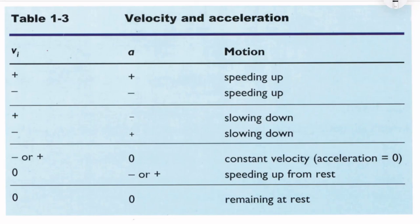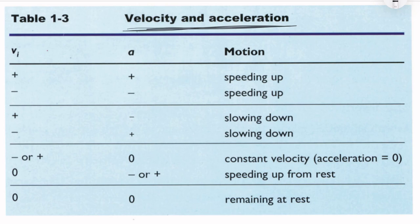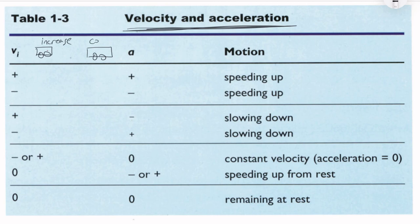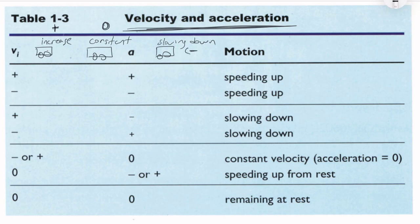Now we are going to discuss the relation between velocity and acceleration, and the signs of each. Using the train example: the train starts from zero velocity, then its velocity increases — that means positive acceleration. After a while it moves at constant velocity — zero acceleration. Then it slows down — negative acceleration.